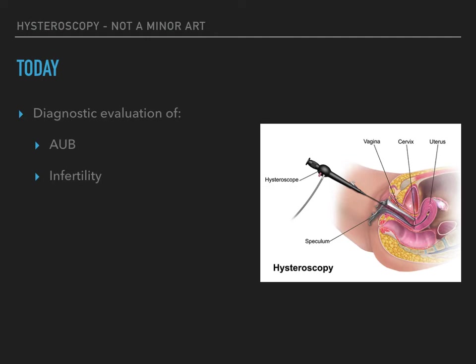In the 1920s, carbon dioxide was incorporated to distend the uterine cavity and this allowed improved visualization. It was only in the 1980s that liquid media was used routinely. Today, we utilize hysteroscopy for multiple indications. These can be divided into diagnostic and operative.